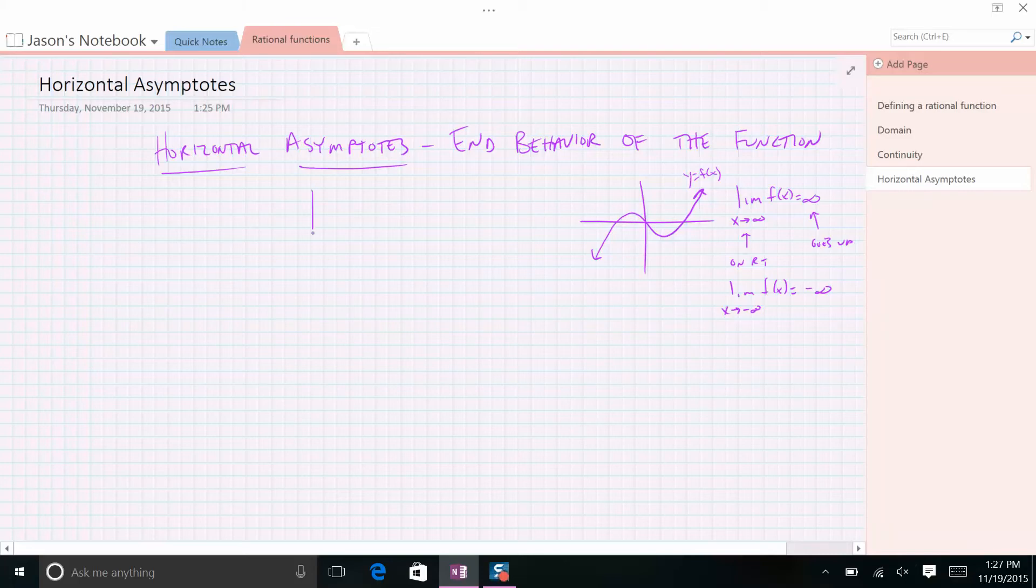Now, for rational functions, if they have a horizontal asymptote, they can have many asymptotes, by the way, so I'm going to start throwing some other stuff at you.